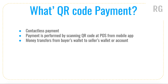QR code payment is basically a contactless payment — that means you don't involve any physical cash during a transaction between you and the seller. So let's say you go into a shop, buy something, and want to pay. There is a QR code in front of the shop; you scan it, see the amount you need to enter, input the amount, confirm, and the money gets transferred into the seller's wallet.